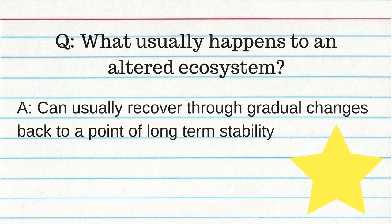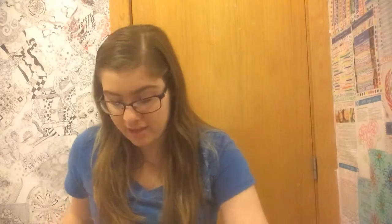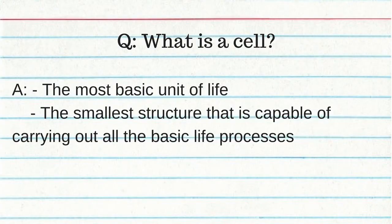What is eutrophication? The pollution and eventual destruction of a lake. What is carrying capacity? The number of individuals an ecosystem can support at a given time. What is a cell? The most basic unit of life — the smallest structure capable of carrying out all the basic life processes.